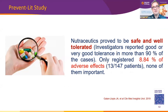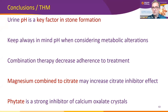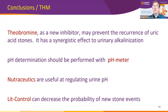To conclude: urine pH is a key factor in stone formation and must always be kept in mind when considering metabolic alterations. Combining magnesium with citrate may increase the citrate inhibitor effect. Phytate is a strong inhibitor of calcium oxalate crystals. Theobromine, as a new inhibitor of uric acid stones, may prevent the recurrence of this type of stones and has a synergistic effect with citrate. pH determination should always be performed with a pH meter, and nutraceuticals are useful in regulating urine pH. Lead Control can decrease the probability of new stone events.